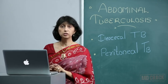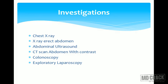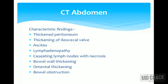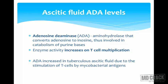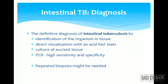Colonoscopy can be performed but the colon is usually not affected; examination must reach the ileocecal junction and terminal ileum. Tissue diagnosis is mainly obtained by exploratory laparoscopy. CT abdomen in abdominal tuberculosis shows characteristic findings: thickened peritoneum, ileocecal valve involvement, ascites, mesenteric lymphadenopathy, caseation and necrosis in lymph nodes, omental thickening, and bowel wall obstruction. Endoscopy shows ulcers, fibrotic strands, fistulae, pseudopolyps, ileocecal valve deformities, and strictures. An important test is adenosine deaminase (ADA) level in the ascitic fluid — ADA is an aminohydrolase enzyme that converts adenosine to inosine, involved in purine catabolism.